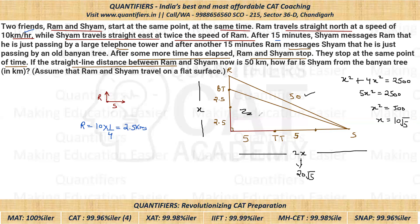Now let's look at the smaller right angle triangle and apply Pythagoras theorem to find d — the distance from Sham to the banyan tree. In this triangle, one side is 5 and the base is 20√5. So d² = 5² + (20√5)² = 25 + (400 × 5) = 25 + 2000 = 2025. Therefore d = 45.